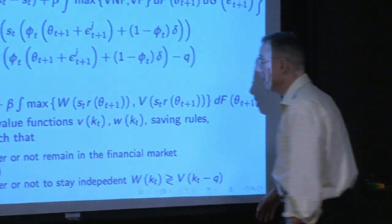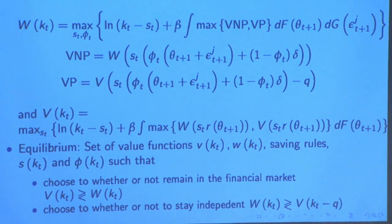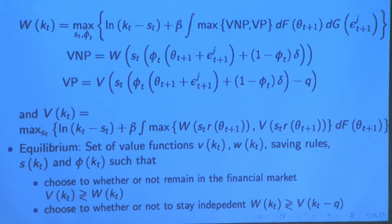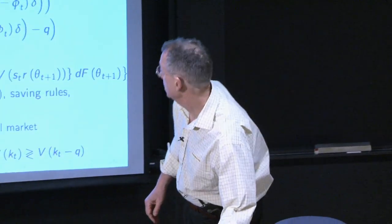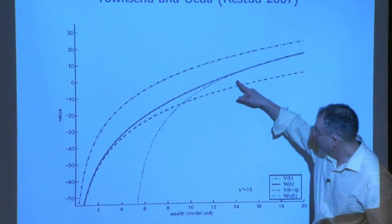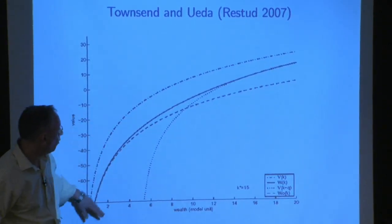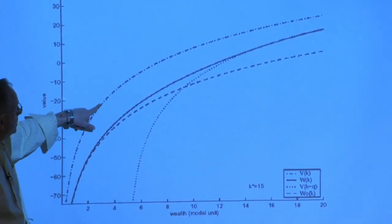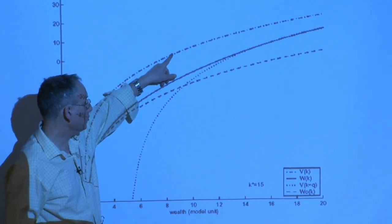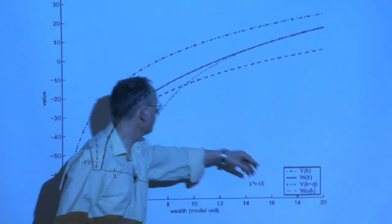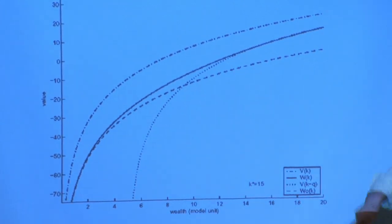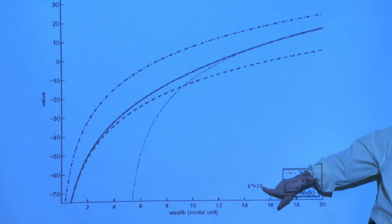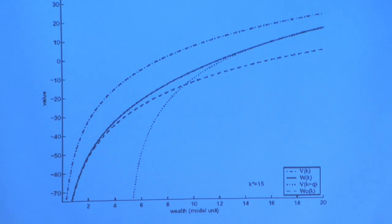You'd have to change this model to get disintermediation. The focus here was on increasing intermediation. In the value function diagram, you have W for low wealth as the highest curve. The key entry point is where V minus Q crosses W — to the left of that point you won't be participating, and to the right you will be. Wealth alone is going to predict whether or not you're in the financial system.